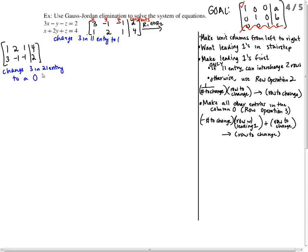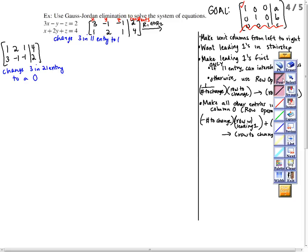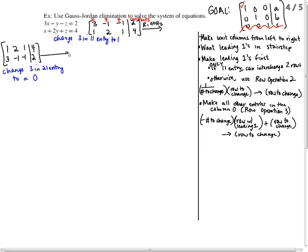The next thing we want to do is change this 3 in the 2,1 entry to a 0. We're going to do that with row operation 3. We take the negative of the number we're trying to change. So I want that 3 to be a 0, so I want to multiply it by negative 3 times the row with the leading 1, row 1. I'm going to add that to row 2 and put that back in row 2. What you're trying to do is create a 0.